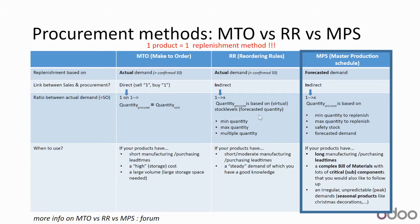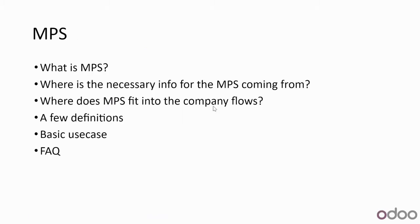Today we focus on the Master Production Schedule. This procurement method is advisable when you have long manufacturing or purchasing lead times, or a complex bill of materials with many critical subcomponents — for example, a car with an engine containing a chassis and perhaps 100–200 sub-components. Another use case would be seasonal products with an irregular and unpredictable peak demand.